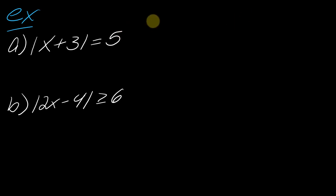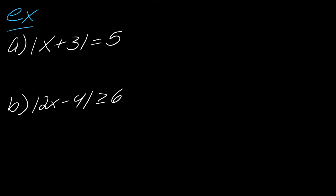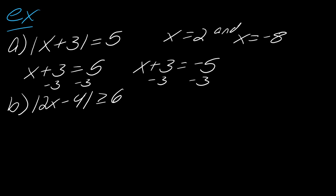Let's jump into an example. I've got the absolute value of x plus 3 equals 5 — this is an equation, so I break into two equations: x plus 3 equals 5 and x plus 3 equals negative 5. Subtracting 3 from both sides, one solution is x equals 2, and the other solution is x equals negative 8.